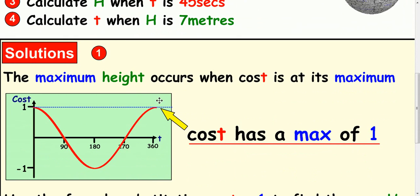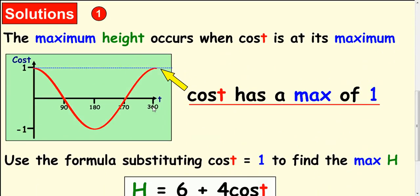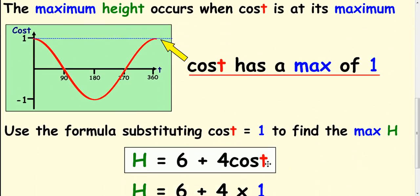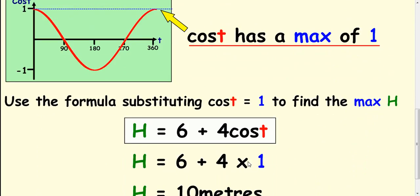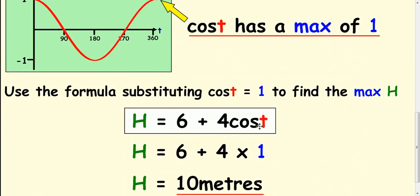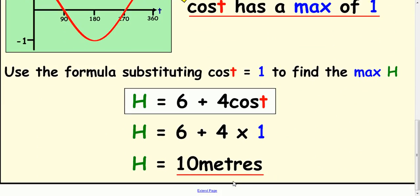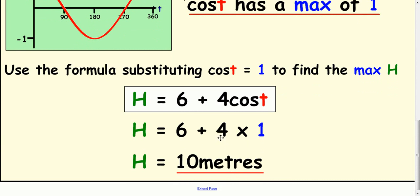So if you look down at the solution, the maximum height occurs when the cos t is at its maximum, which is equal to 1. So what we do here is we replace cos t with 1. So the equation becomes 6 plus 4 times 1, which is 10. And that's the answer to part 1.